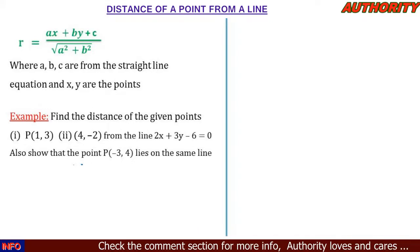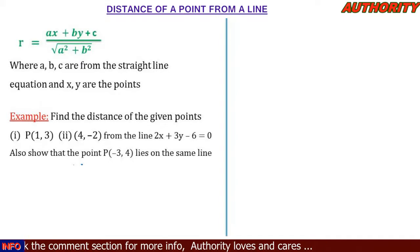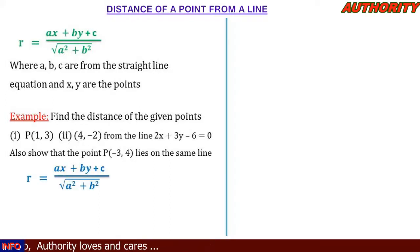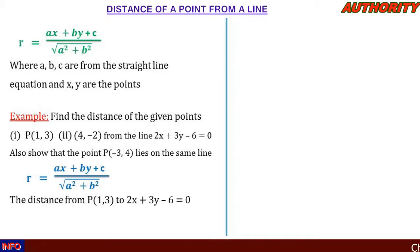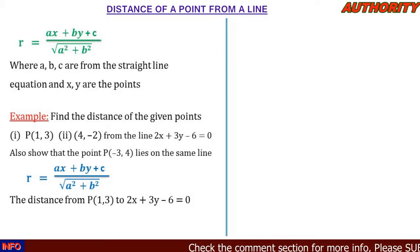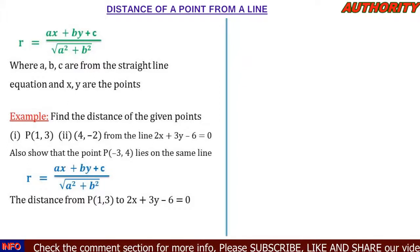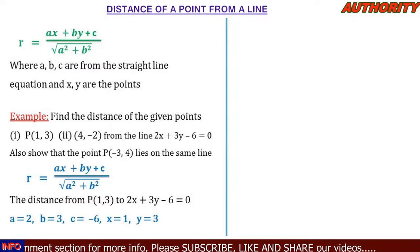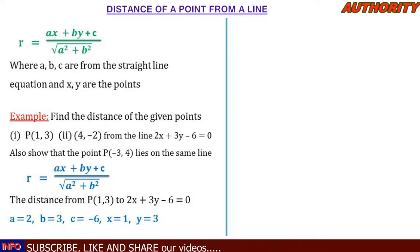Solution number one. We already know the distance formula: r equals ax plus by plus c all over square root of a squared plus b squared. We want to find the distance from the point (1, 3) to the line 2x plus 3y minus 6 equal to 0. So a, b, c come from the equation of the line: a equals 2, b equals 3, c equals minus 6. And x, y come from the point: x equals 1, y equals 3.